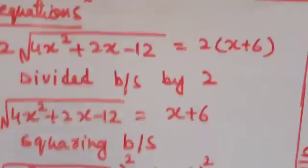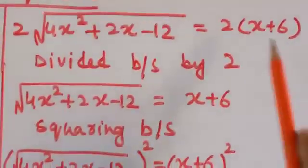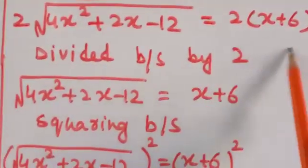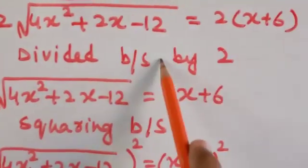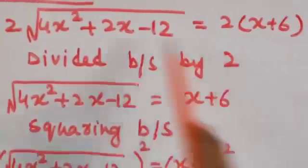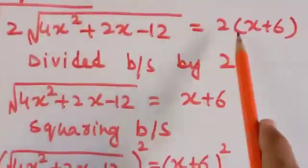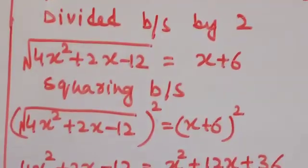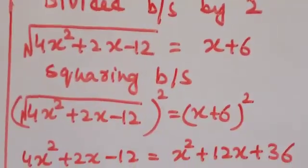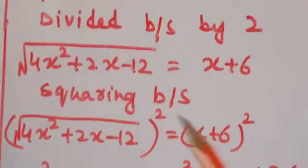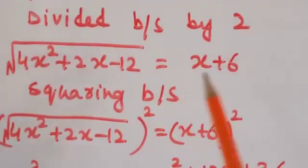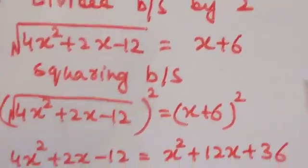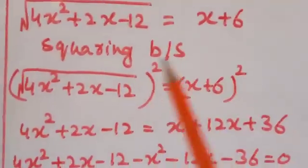Dividing both sides by 2: the 2 on each side cancels, leaving √(4x² + 2x − 12) = x + 6.